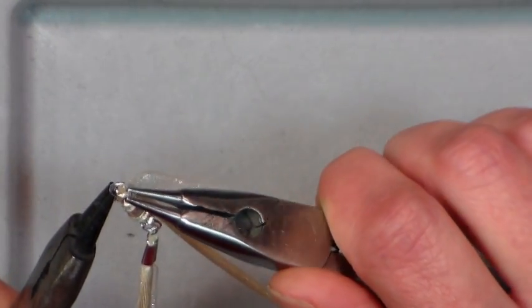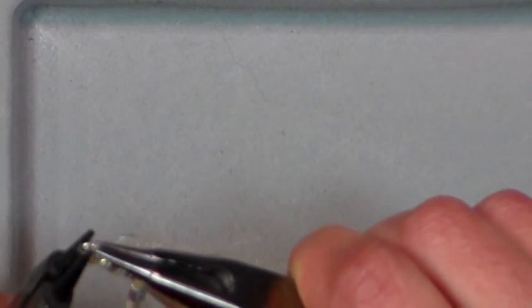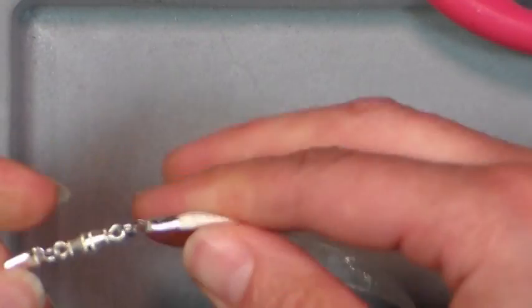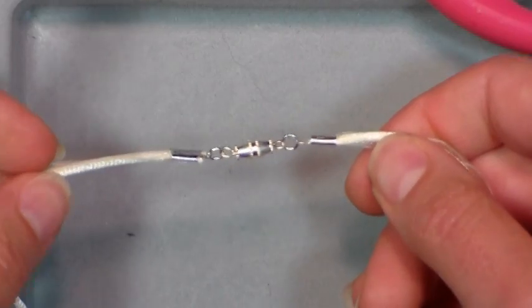And then grabbing the jump ring again, I'm going to twist it shut. I do have jump ring openers, but I find that I can do a much better job with the pliers and they don't tend to come apart, so there you have that.